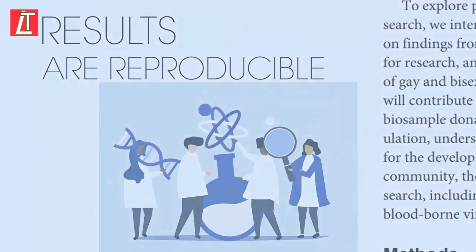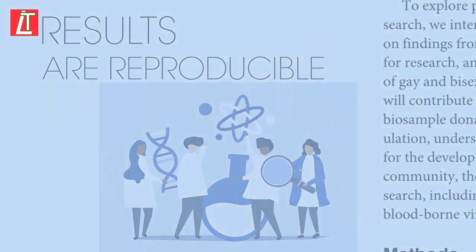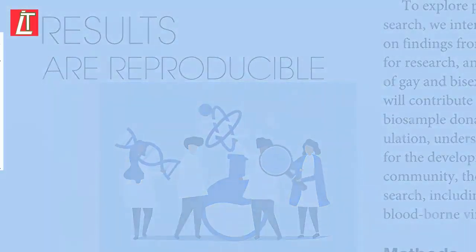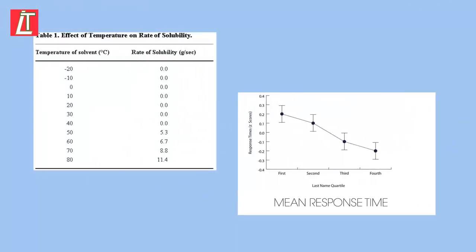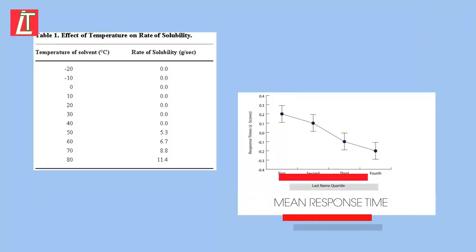The results are stated simply in tables or graphs. There is no explanation of the results in this section. Tables must have the units at the top of the columns and may include averages. Graphs must have the axes labelled and include a title, usually underneath.